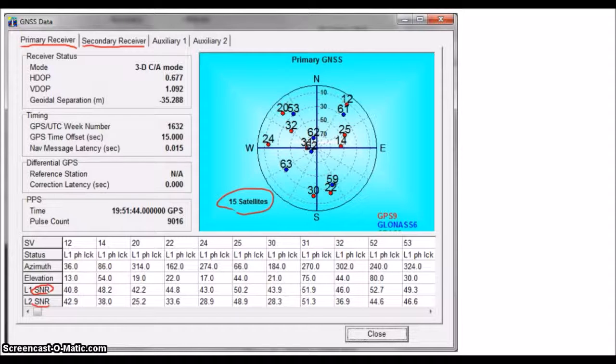You can also see the signal-to-noise ratios, or SNR, for each satellite, letting you know how strong a signal you are receiving. You can see that the receiver is in 3D CA mode, and that we are getting a good L1 phase lock, which means it is picking up those PRN codes that we talked about earlier.